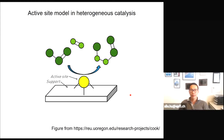In heterogeneous catalysis, the active site model is well recognized and well used. Typically people think that in the big catalyst assembly there are only a small portion of atoms responsible for the activity — these are the so-called active sites — and they are normally loaded on a support where reactions take place.